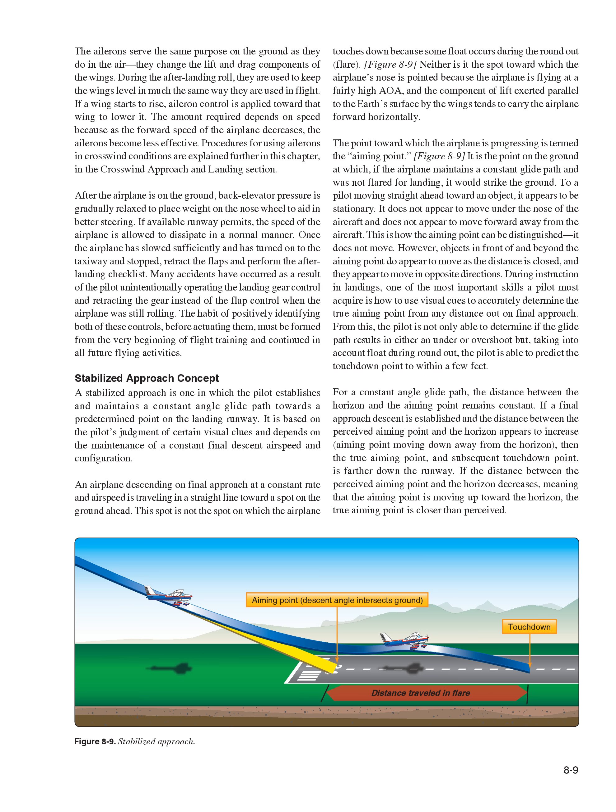The ailerons serve the same purpose on the ground as in the air—changing the lift and drag components of the wings. During the after-landing roll, they are used to keep the wings level. If a wing starts to rise, aileron control is applied toward that wing to lower it; the amount required depends on speed as the ailerons become less effective as forward speed decreases. After the airplane is on the ground, back elevator pressure is gradually relaxed to place weight on the nose wheel for better steering. Once the airplane has slowed and turned onto the taxiway, retract the flaps and perform the after-landing checklist. The habit of positively identifying both the landing gear and flap controls before actuating them must be formed from the very beginning of flight training.